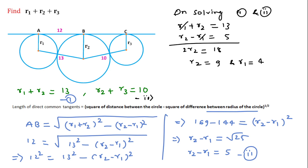So r3 equals 10 minus 9 equals 1. Putting all values together: r1 plus r2 plus r3 equals 4 plus 9 plus 1, which equals 14. So 14 will be the right answer for this question. Thanks for watching this video and please like, share, and subscribe to this channel.